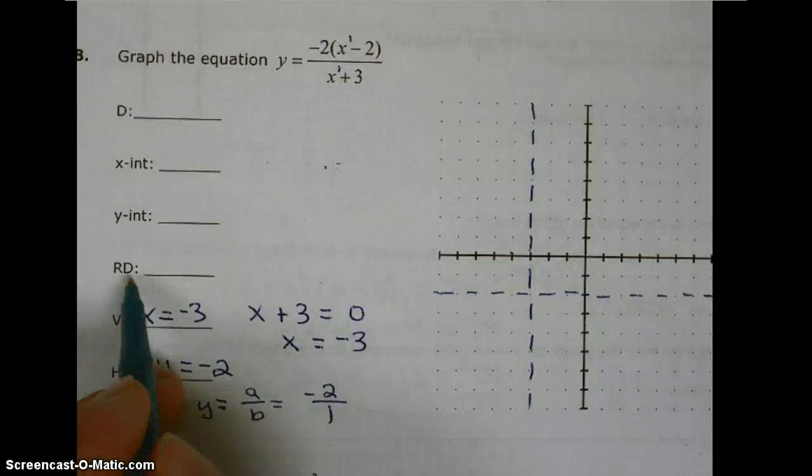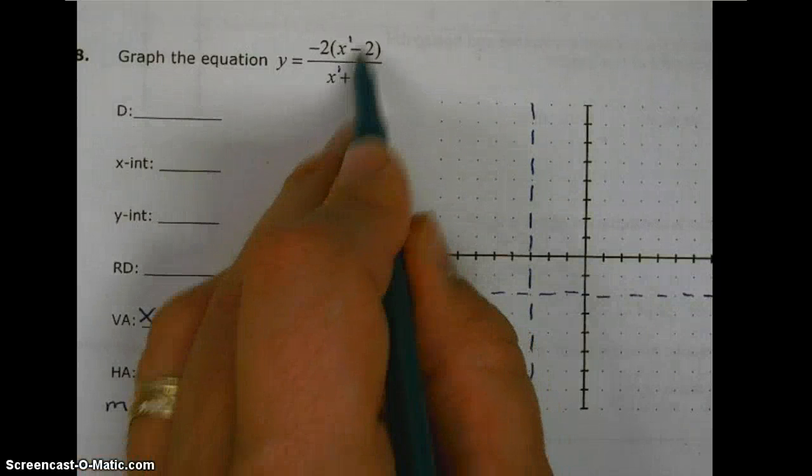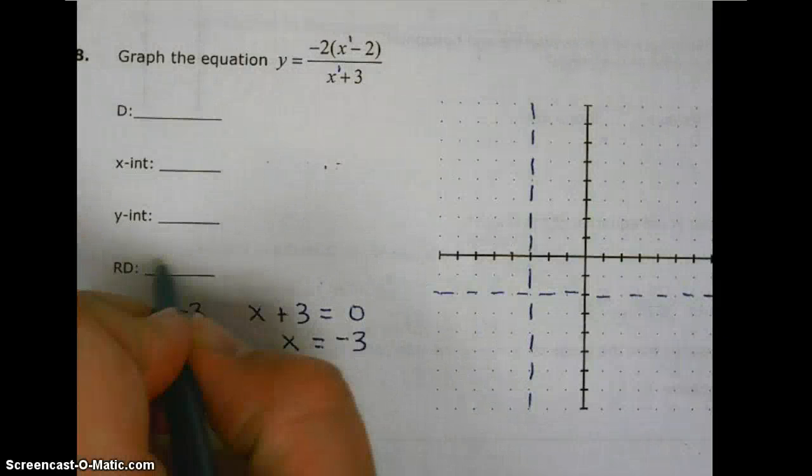Now, looking for any removable discontinuities, the factors do not cancel, so there are none.